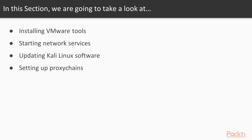We'll then move on to learning how to update Kali Linux — specifically the correct way of updating the repositories, updating the packages, and then updating the distribution. After that, we'll move on to setting up proxy chains, which is our anonymity provider. We'll configure it to work with Tor, tunneling our traffic through the Tor relay using proxy chains.